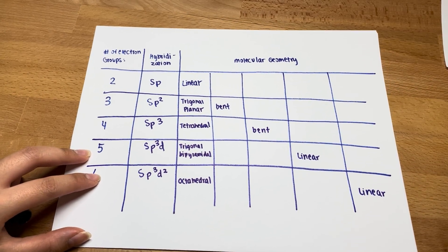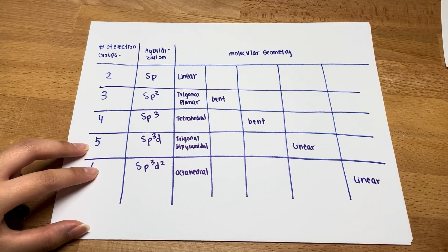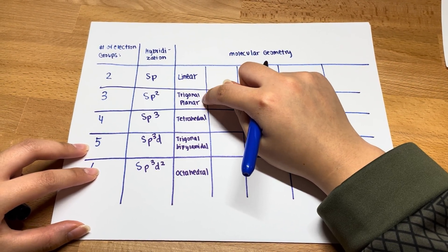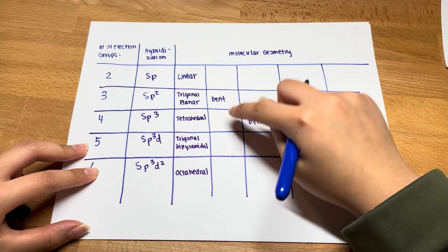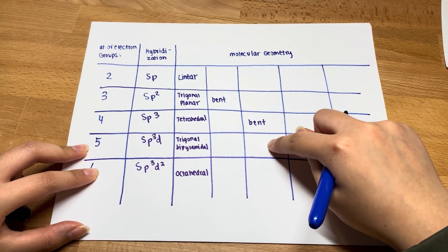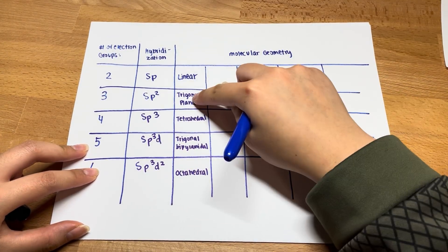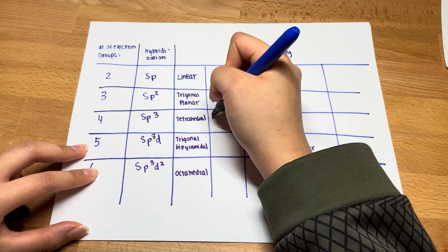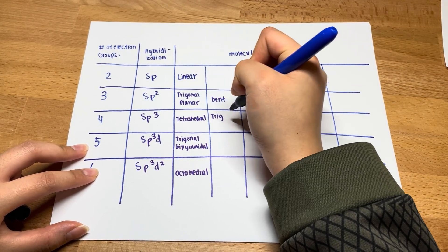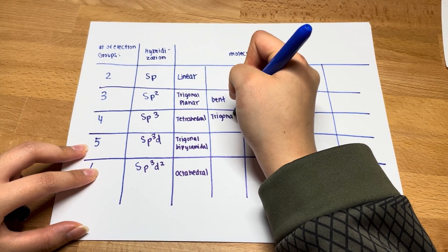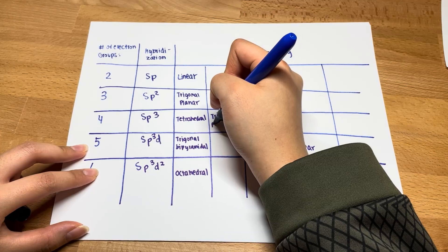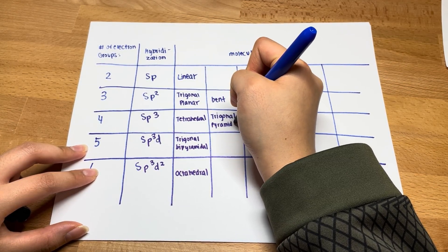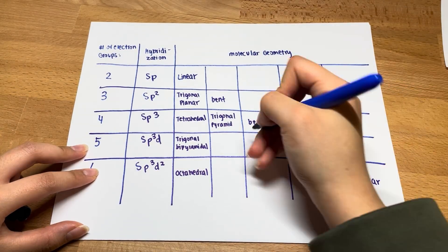Now you want to do, remember this, trig plane, trigonal, trigonal planar, trig mid, T shape, T shape. So trig plane, trig, T shape, T shape.